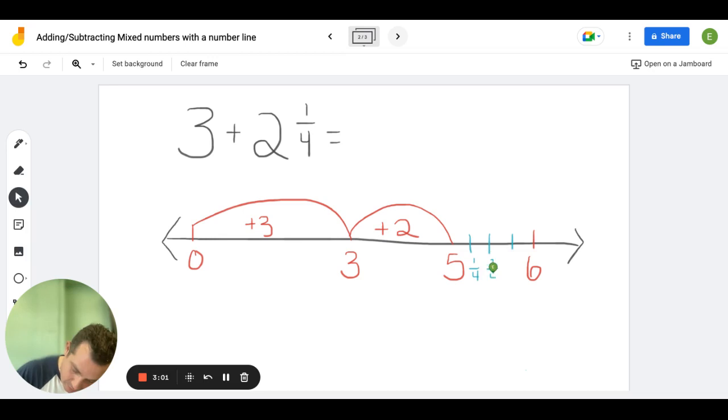One fourth, two fourths, three fourths. So I added my 3 wholes, my 2 wholes, and now I need to add 1/4. I'm at 5, I'm going to take one more jump and add my 1/4. And where am I right here? I am 5 and 1/4. So my answer is 5 and 1/4.